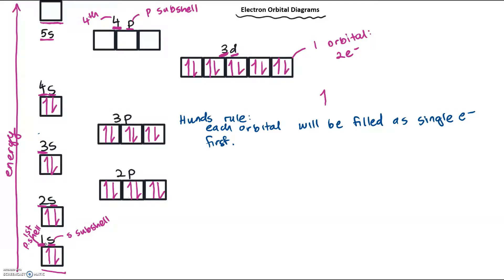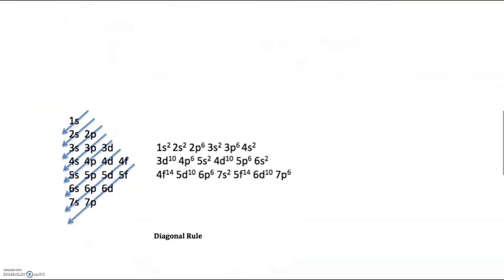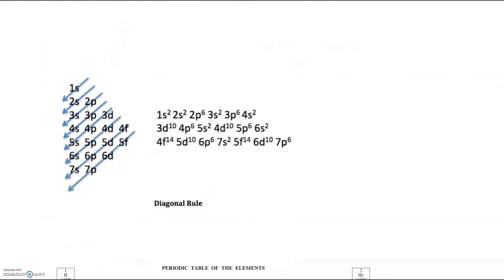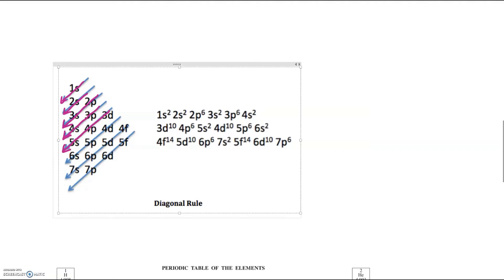The overall filling pattern is: 1s first, then 2s, then 2p, then 3s, then 3p, then 4s, then 3d, and so on. That is why electrons are filled in the following SPDF notation order.